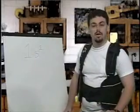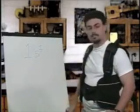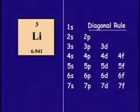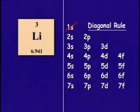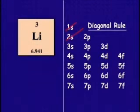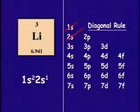What would be the electron configuration of lithium, which has an atomic number of three? According to the diagonal rule, we first place two of the three electrons in the 1s sublevel. We still have one more electron to place, so the next sublevel to fill is 2s. Although 2s can hold two electrons, there's only one lithium electron remaining. Lithium's electron distribution is read 1s², 2s¹.